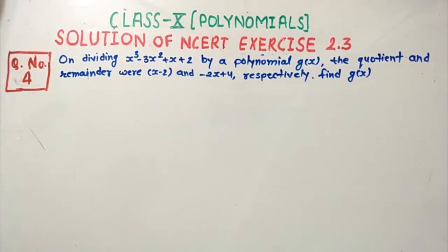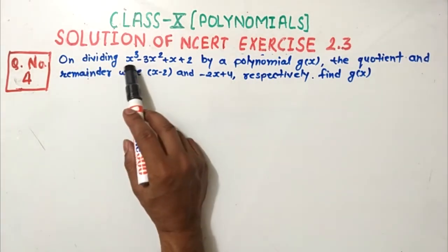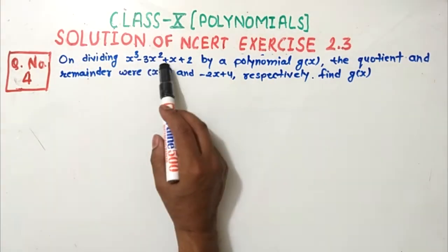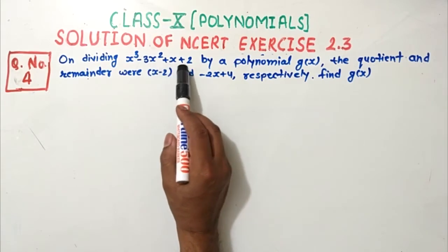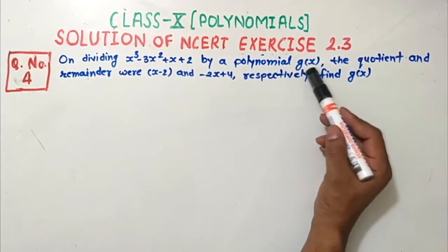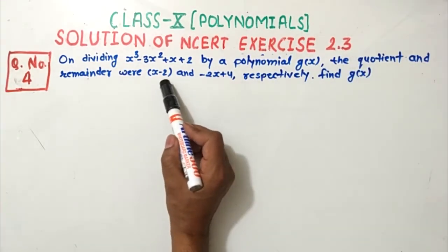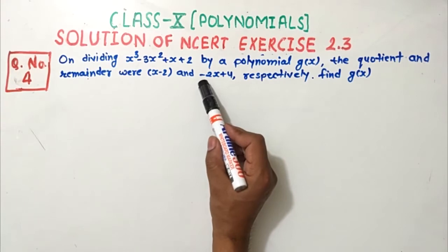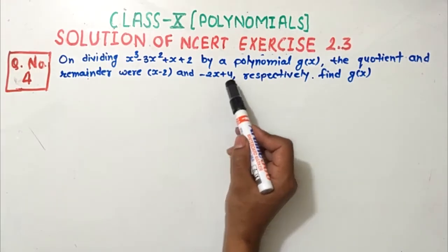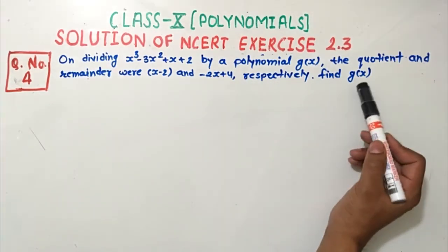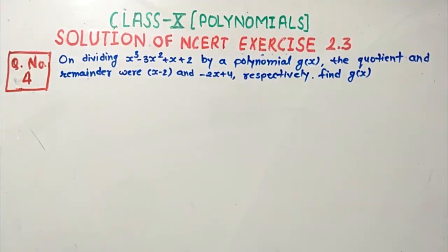Hello friends, I am Dinesh with another question from Exercise 2.3, Question Number 4. The question is on dividing x³ minus 3x² plus x plus 2 by the polynomial g(x), where the quotient is x minus 2 and remainder is minus 2x plus 4. We have to find g(x).